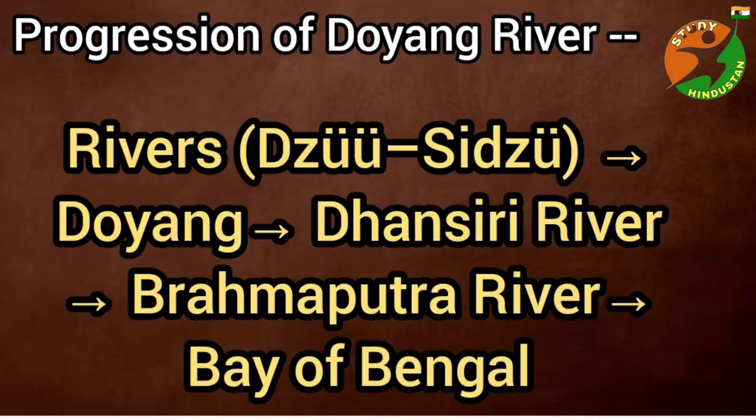Progression or path of Doyang river: the Dizu and Sidju rivers join together to form the Doyang river. The Doyang river then meets the Dhansiri river, and together they drain into the Brahmaputra river, which then flows into the Bay of Bengal.